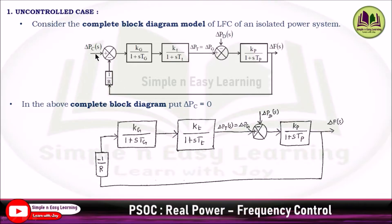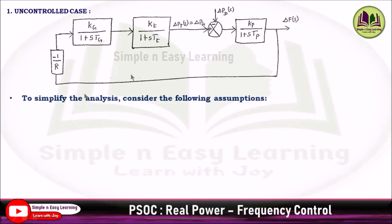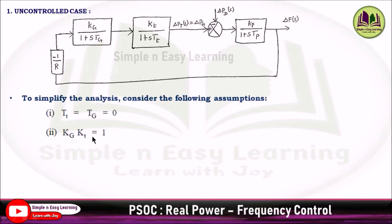We are eliminating the LPC assuming there is no change in the speed changer setting. To simplify the analysis, consider the following assumptions: the turbine time constant and generator time constant equal to 0, and the product of the generator gain and turbine gain equals 1.